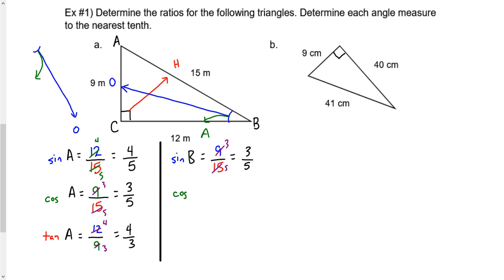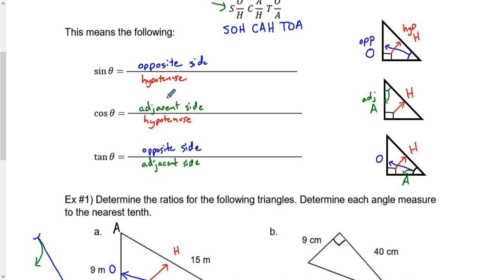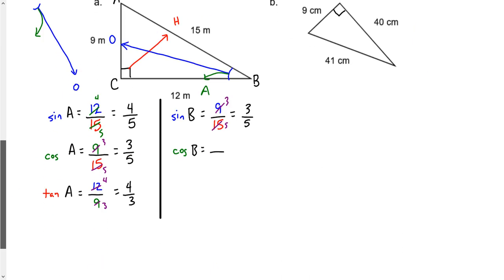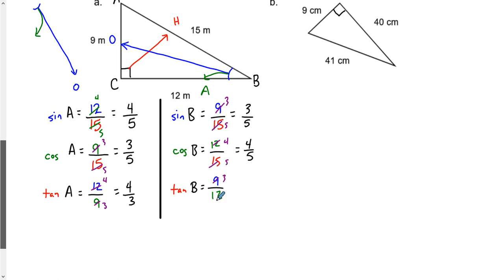The cosine of B is the adjacent over the hypotenuse: 12 over 15, which reduces to 4 over 5. The tangent of B is opposite over adjacent: 9 over 12, which reduces to 3 over 4, or three-quarters. You'll notice there are some special relationships here — we delve into them further in pre-calculus 20, especially talking about the relationships between different angles.